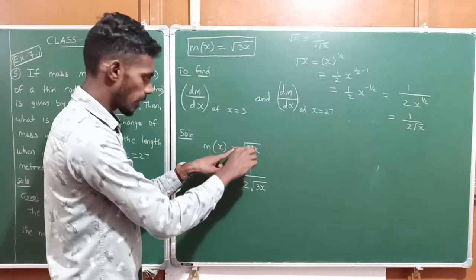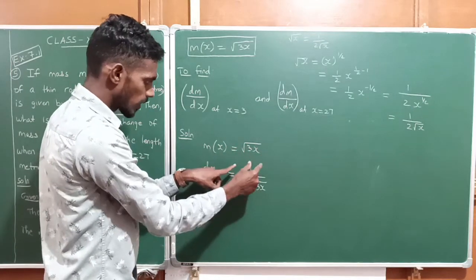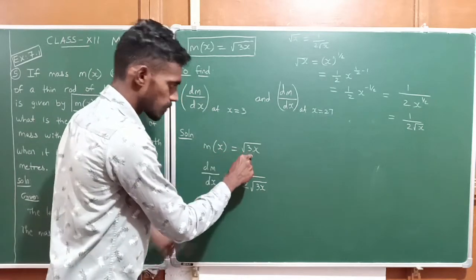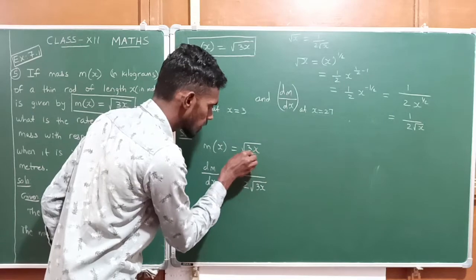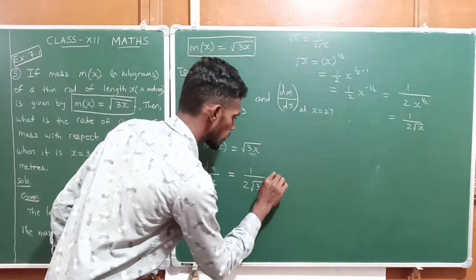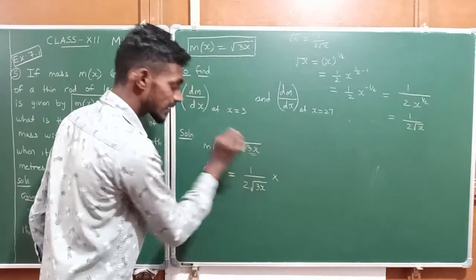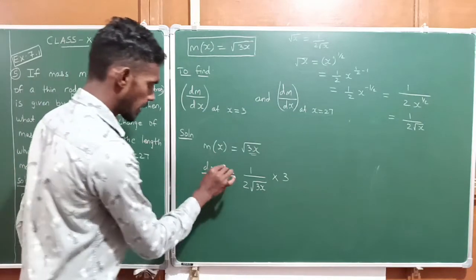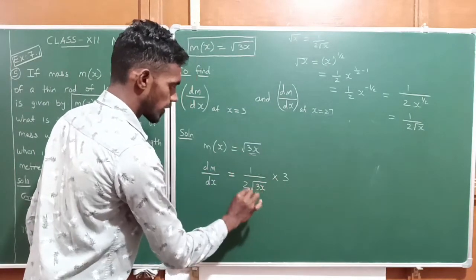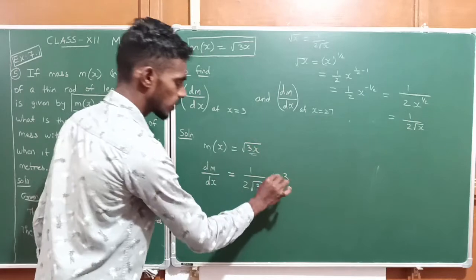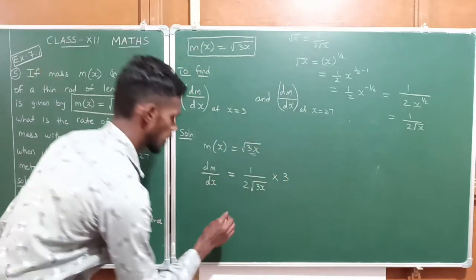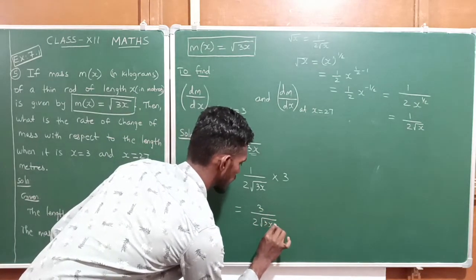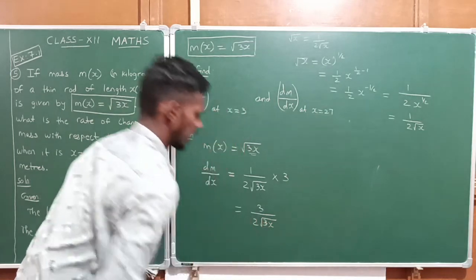Now we apply the chain rule. We have the 1 by 2 root formula applied. Since we are differentiating with respect to x, there is an inner term 3x, so by chain rule we differentiate 3x separately, which gives 3. So dm/dx = 1/(2√(3x)) × 3, applying the chain rule. This gives dm/dx = 3/(2√(3x)).